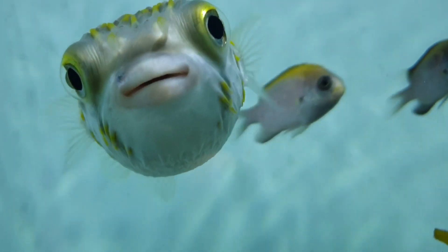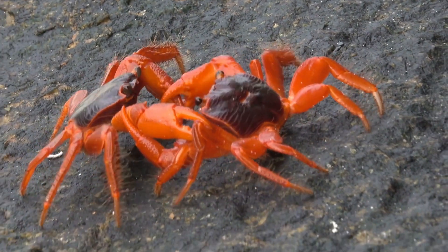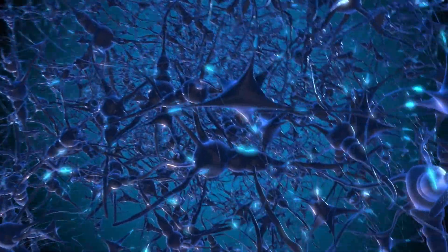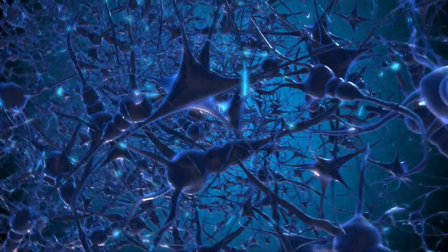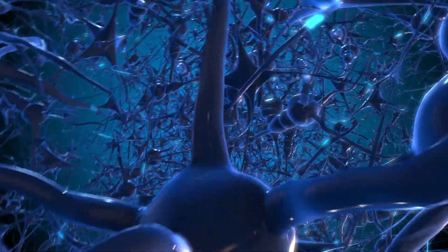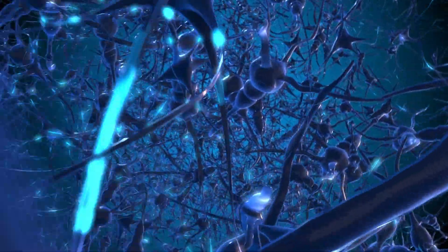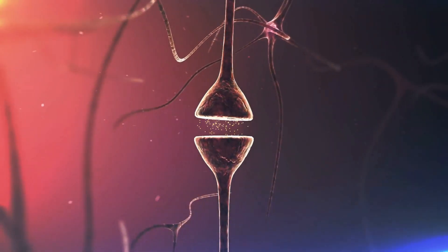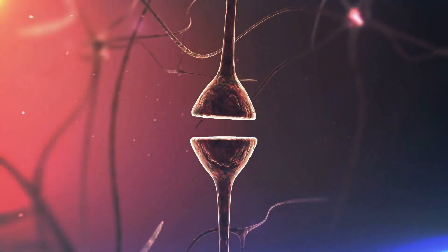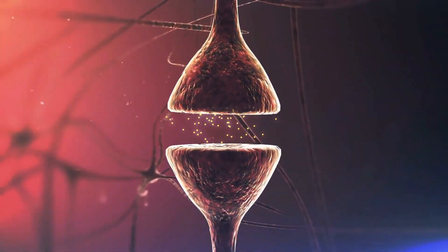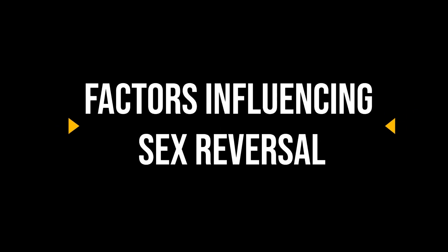In each of these animal groups, sex reversal occurs through complex biological mechanisms. These mechanisms involve changes in hormone levels, the transformation of sex cells, and behavioral and physiological modifications. A detailed analysis of these mechanisms can help us understand the intricate functioning of sex reversal in animals.